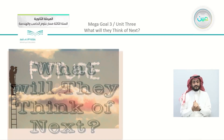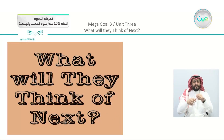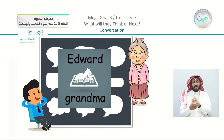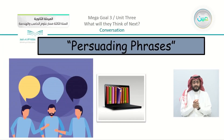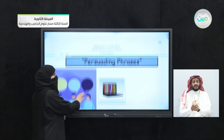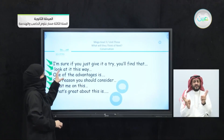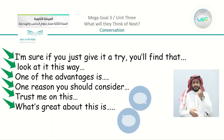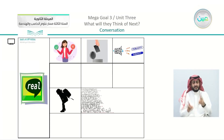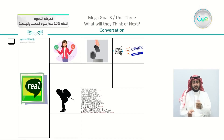Now we had our lesson in our unit: 'What will they think of next?' Our lesson was about Edward and his grandmother in the conversation part in our book. In the conversation, we talked about using persuading phrases and how we can apply them, as well as the real talk phrases or words that we can use.